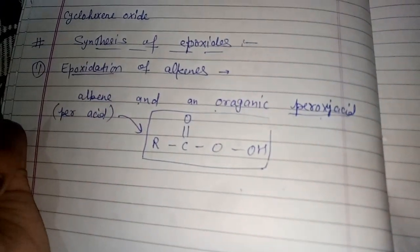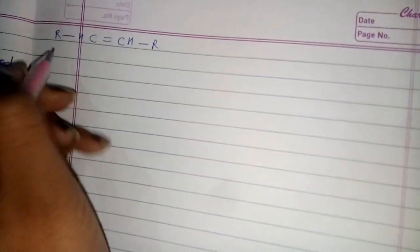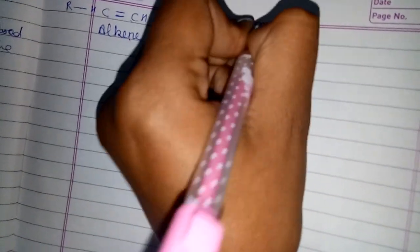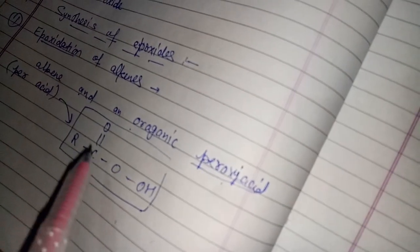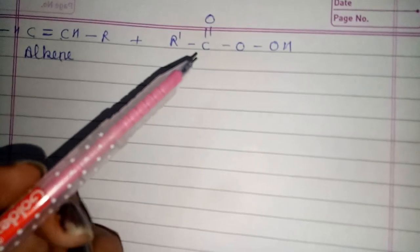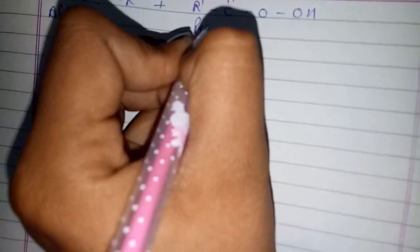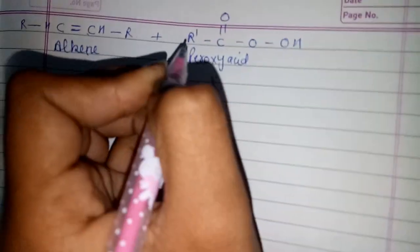When an alkene reacts with an organic peroxy acid, the reaction proceeds as epoxidation of alkenes. We take an alkene with a double bond between two carbon atoms, and we add peroxy acid — R-C(=O)-O-OH — to proceed the reaction: alkene plus peroxy acid gives epoxidation.